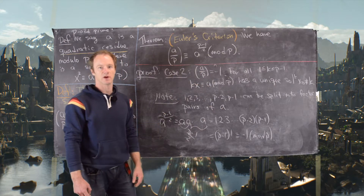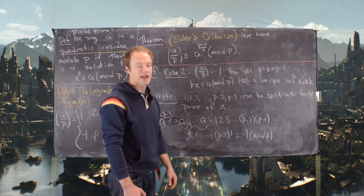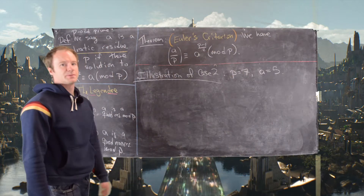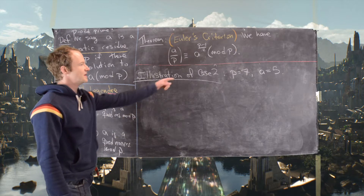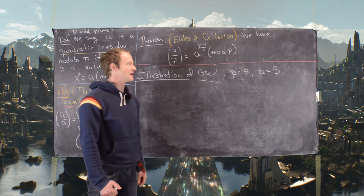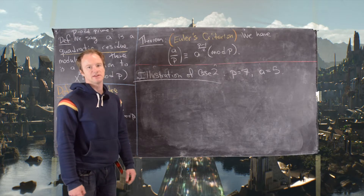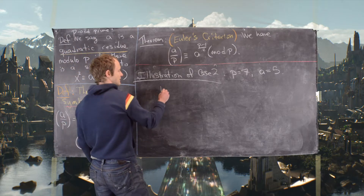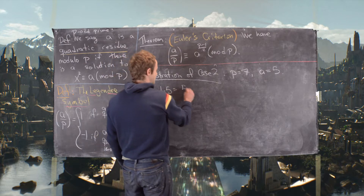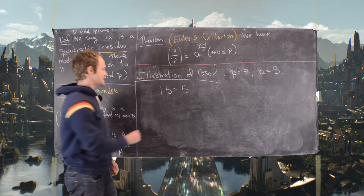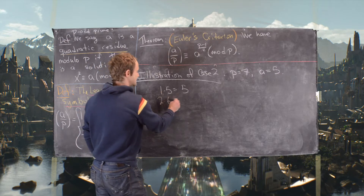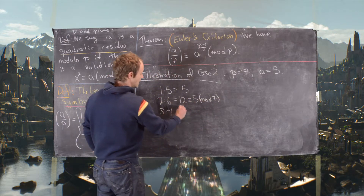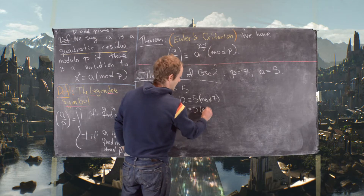Since Case 2 of the proof is tricky, let's illustrate it with a concrete example. Take p = 7 and a = 5, which is a quadratic non-residue mod 7. The factor pairs of 5 mod 7 are: 1×5 ≡ 5, 2×6 = 12 ≡ 5, and 3×4 = 12 ≡ 5 (mod 7).